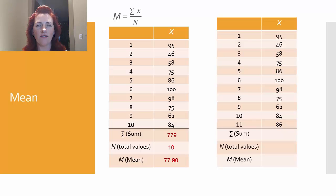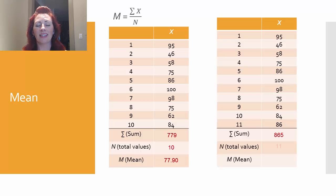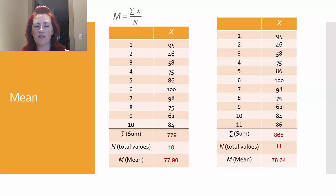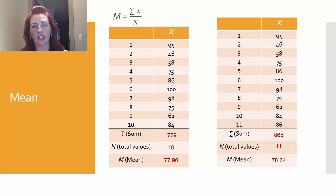For the second data set, all I've done is added another point — an eleventh score of 86. If we sum all of these scores together, that sum will be 865. Since we added one number, n now becomes 11. To calculate the mean, we take 865 divided by 11, which gives us 78.64. Comparing the two data sets, we can see that the second data set with the extra point of 86 added has a larger mean, so the test scores on average tend to be larger for the second data set.